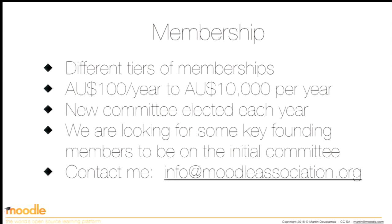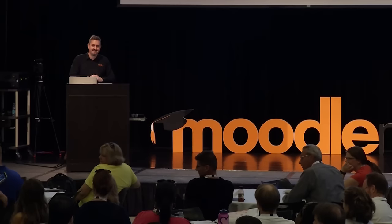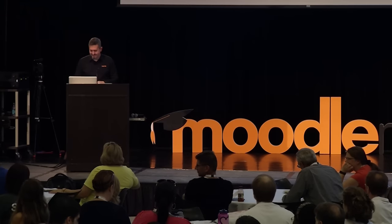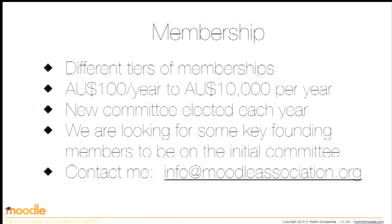The membership levels are about $100 Australian per year — probably $80 US — up to $10,000 Australian. It's going to be very global. We really want an international organisation, and I've already got interest from people all around the world. We haven't actually started yet — we're just going through the registration process and the legalities of making a non-profit. Shannon Johnston is here — she's one of our project managers looking after getting the association going. If you've got any questions, you can talk to her, or email info at moodleassociation.org.